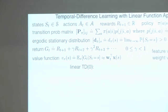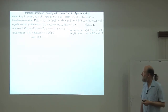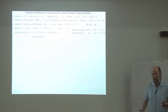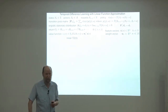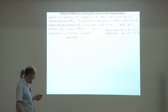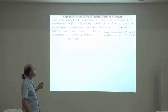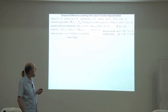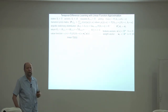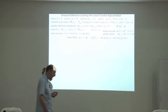Linear TD(0). It's linear because we're making a linear approximation where estimates are the inner product—as opposed to tabular, where we have a separate estimate for each discrete state. TD is temporal difference learning, meaning time difference or change. TD(0) is the simplest case of this algorithm. There's also TD(lambda), which is a generalization, but I'll just do the simplest case to get our intuitions well worked out.